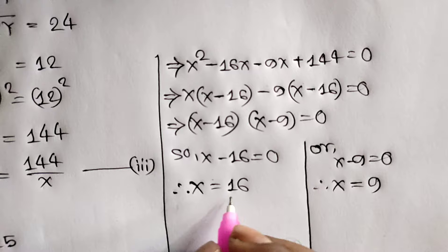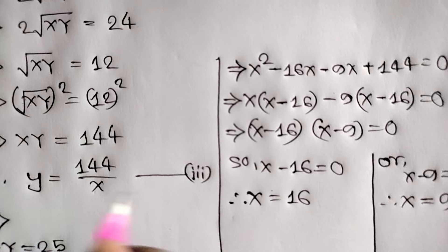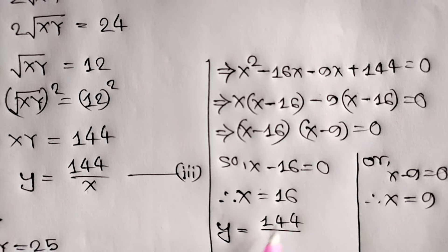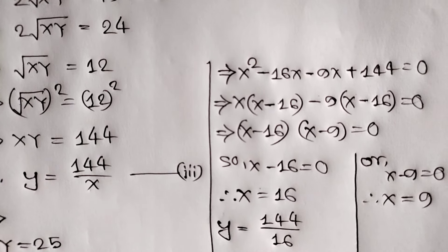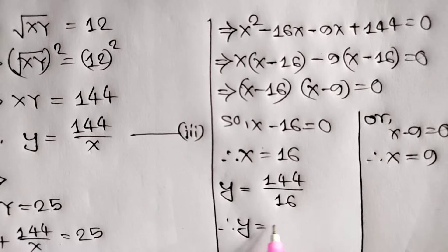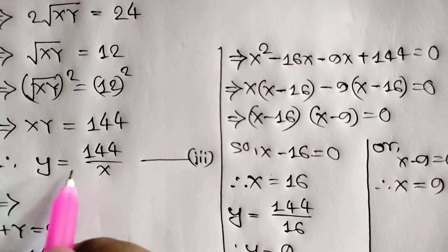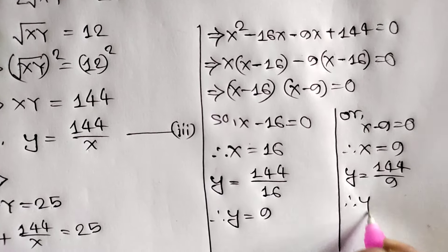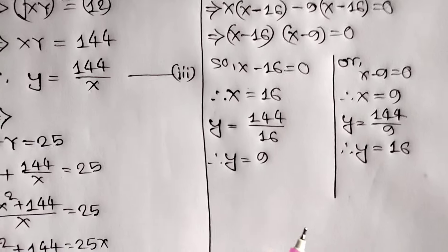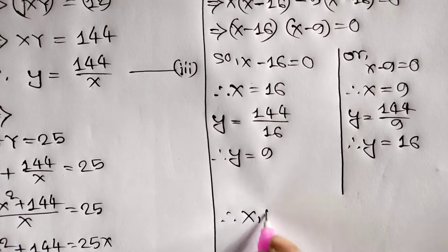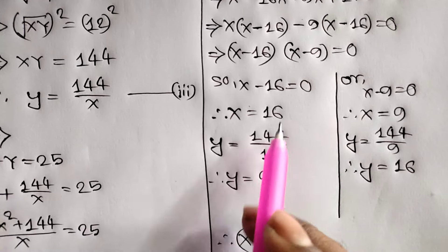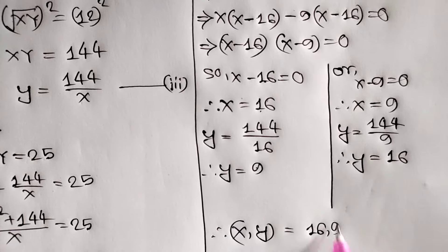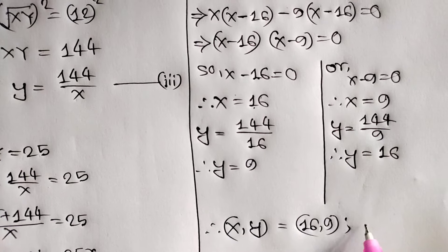When x = 16, from equation number 3: y = 144/16 = 9. When x = 9, from equation number 3: y = 144/9 = 16. So the solutions are (x, y) = (16, 9) and (x, y) = (9, 16).